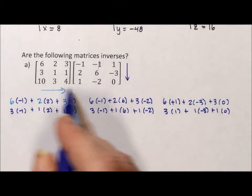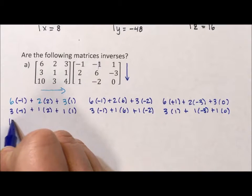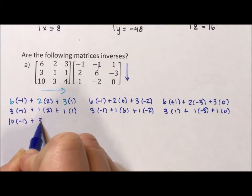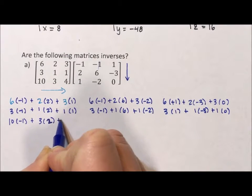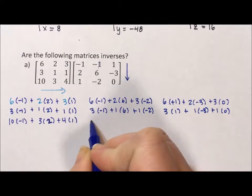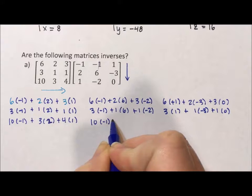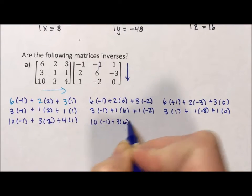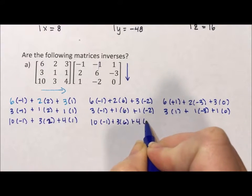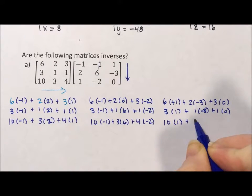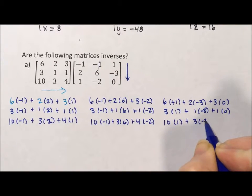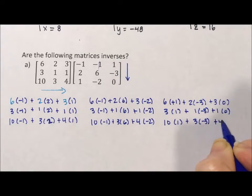Now the last row. I have 10 times negative 1 plus 3 times 2 plus 4 times 1, then 10 times negative 1 plus 3 times 6 plus 4 times negative 2, and 10 times 1 plus 3 times negative 3 plus 4 times 0.